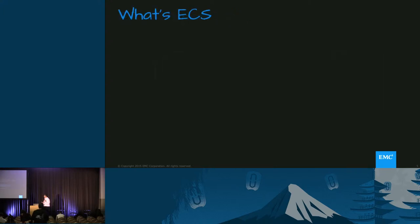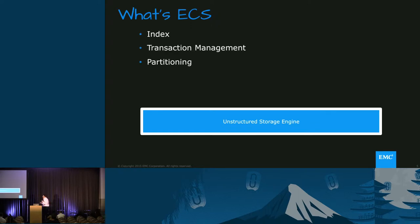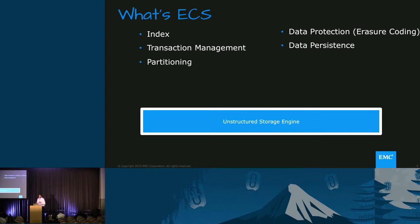Before discussing the Keystone integration and how ECS works in that environment, it's important to look at what ECS actually is and what it provides. When we looked at storage in general, there is unstructured and structured data. ECS focuses on how to manage unstructured data at scale. It developed a way that all unstructured data is stored under a single engine — unique in the sense that it does indexing, transaction, partitioning, but also persistence, like erasure coding the data and spreading it across the cluster.